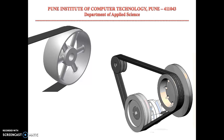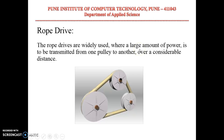In the case of a V-belt drive, we have groove pulleys — the belt is mounted in the groove. Rope drives are widely used where a large amount of power is to be transmitted from one pulley to another over a considerable distance.